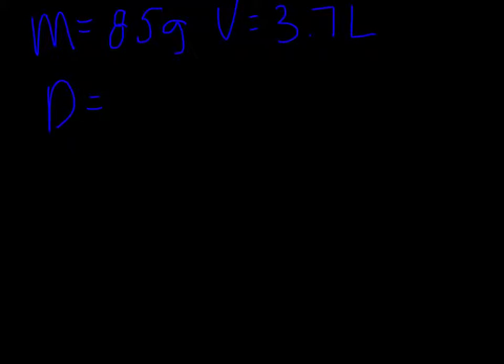Here's example one. Find the density of a metal with a mass of 85 grams and a volume of 3.7 liters. So first you want to write down the equation that you will be using. So our equation will be d equals m over v.